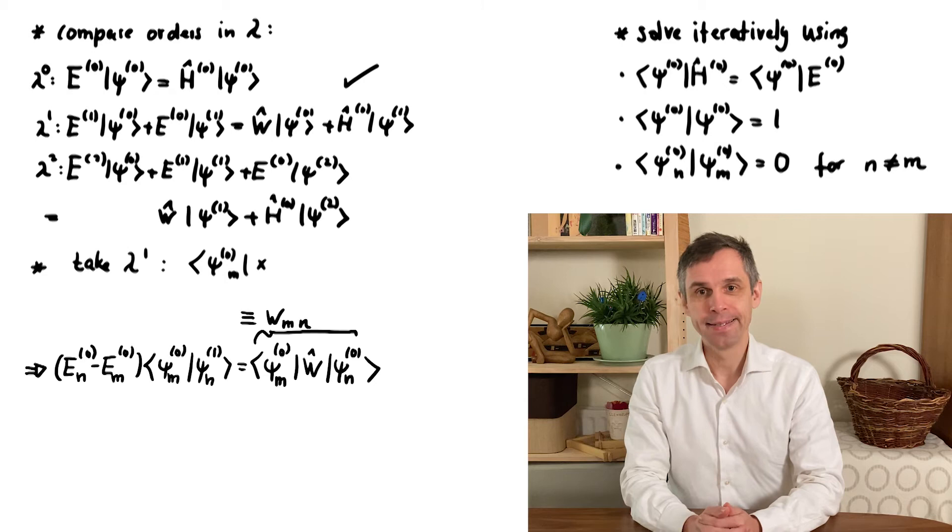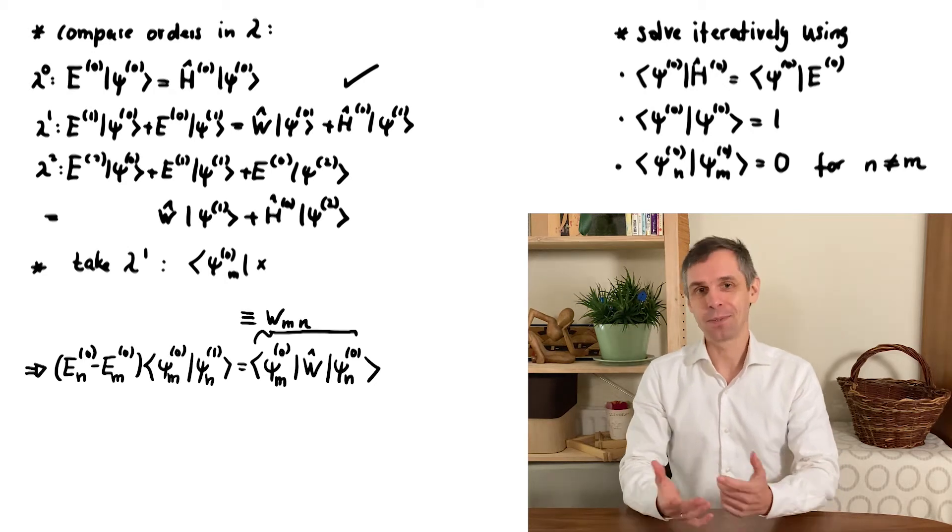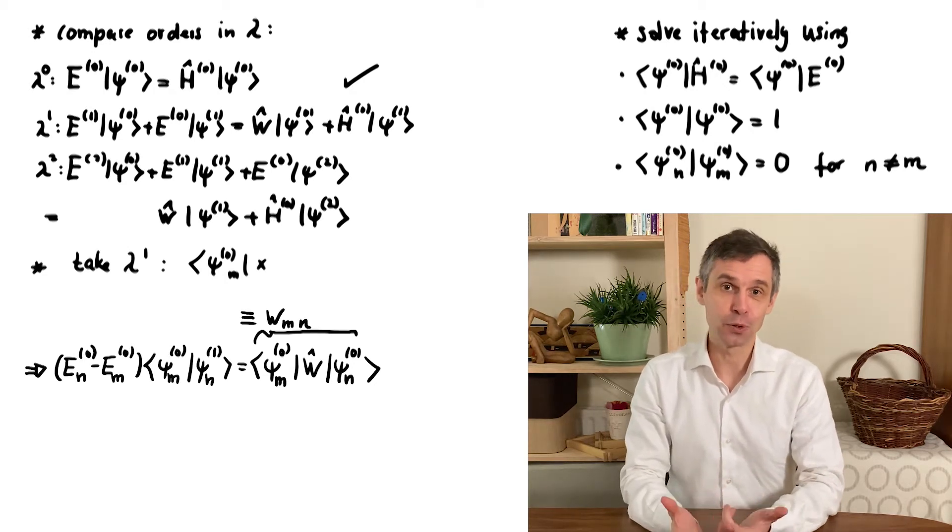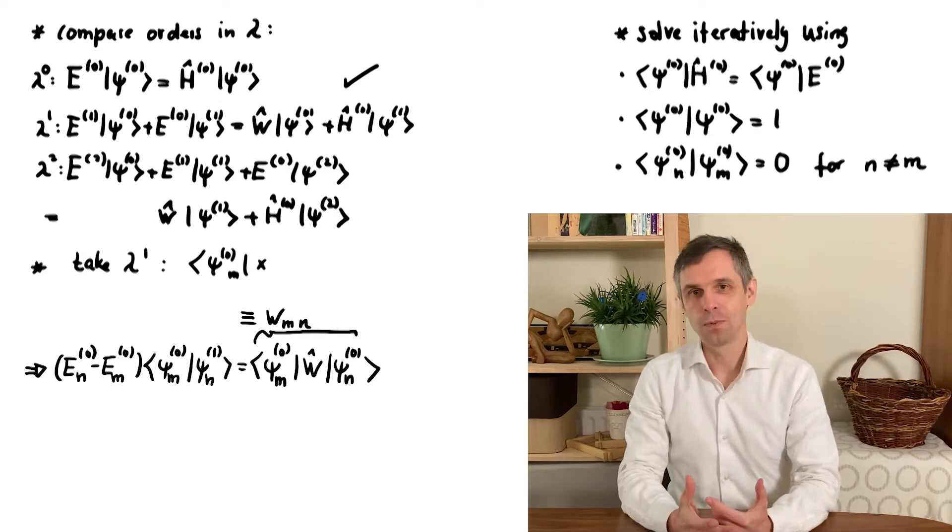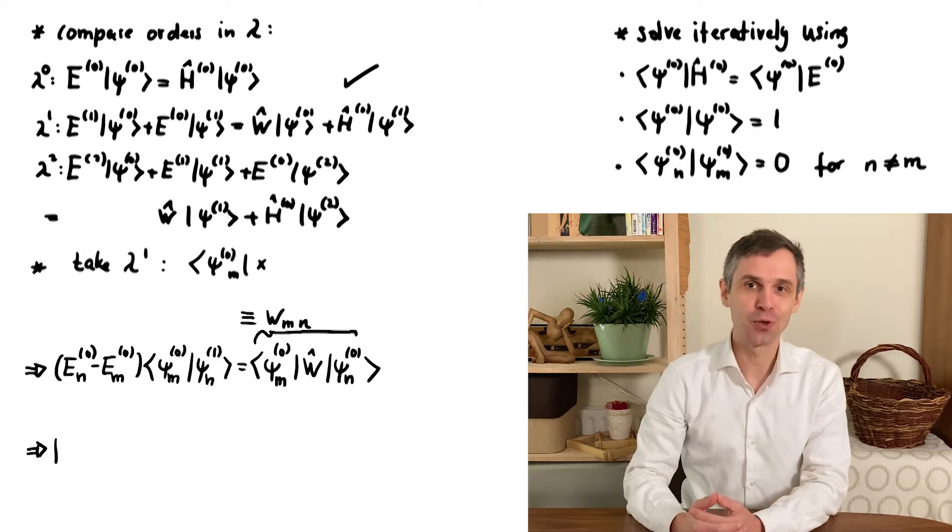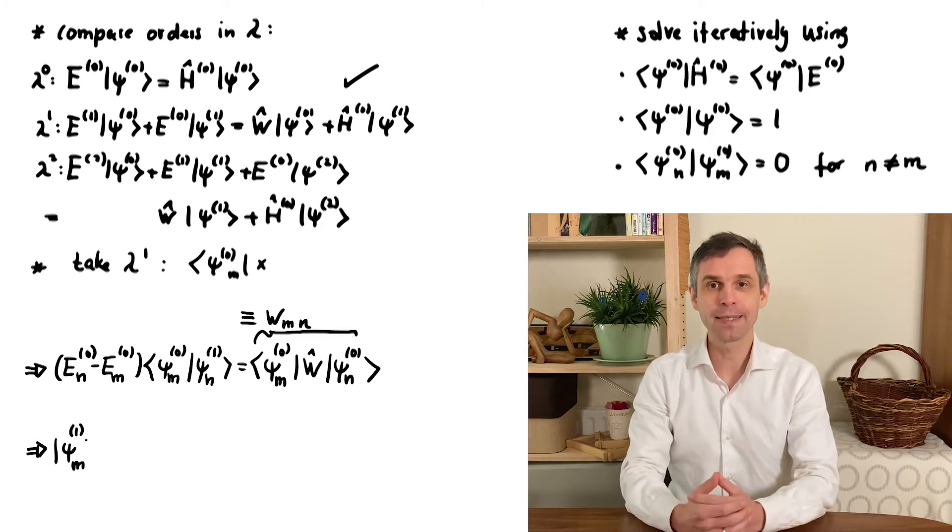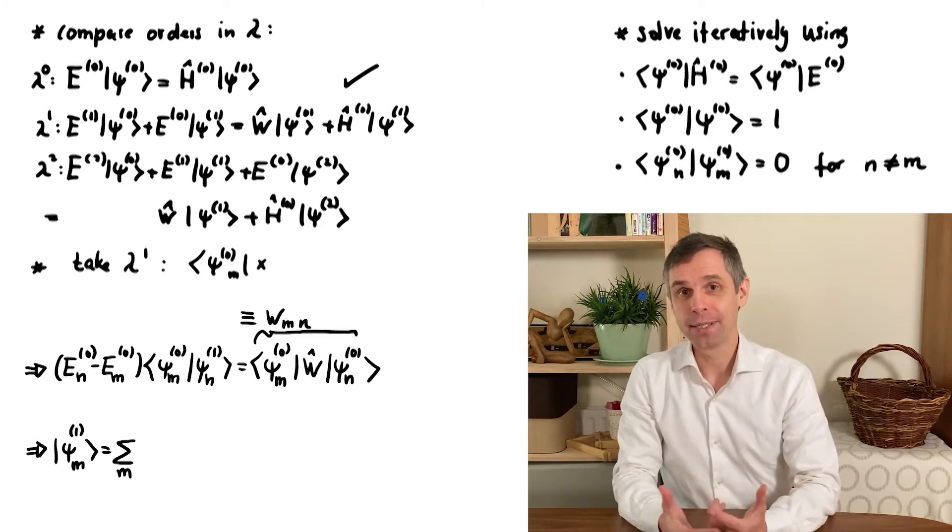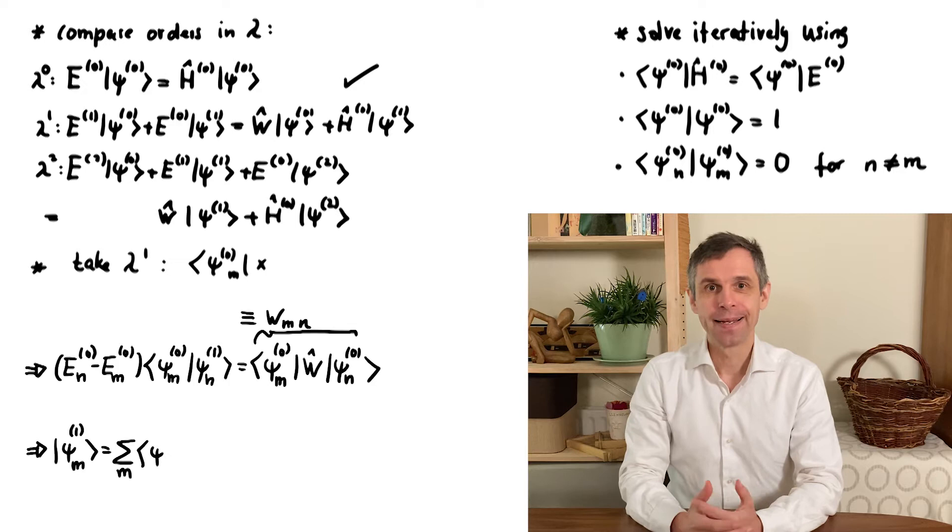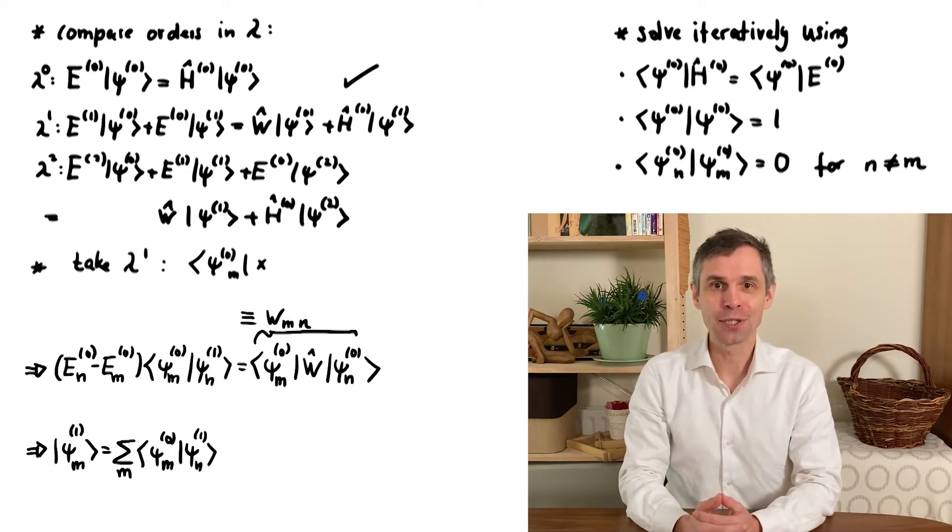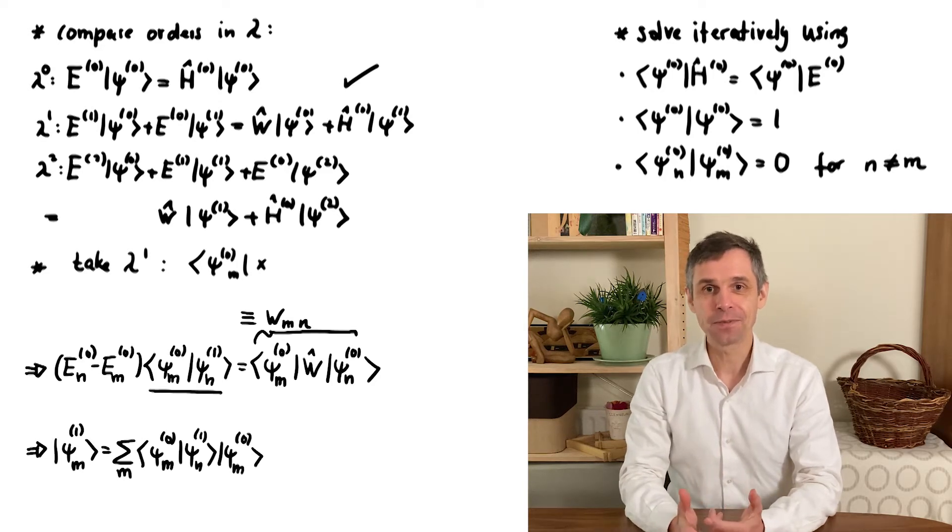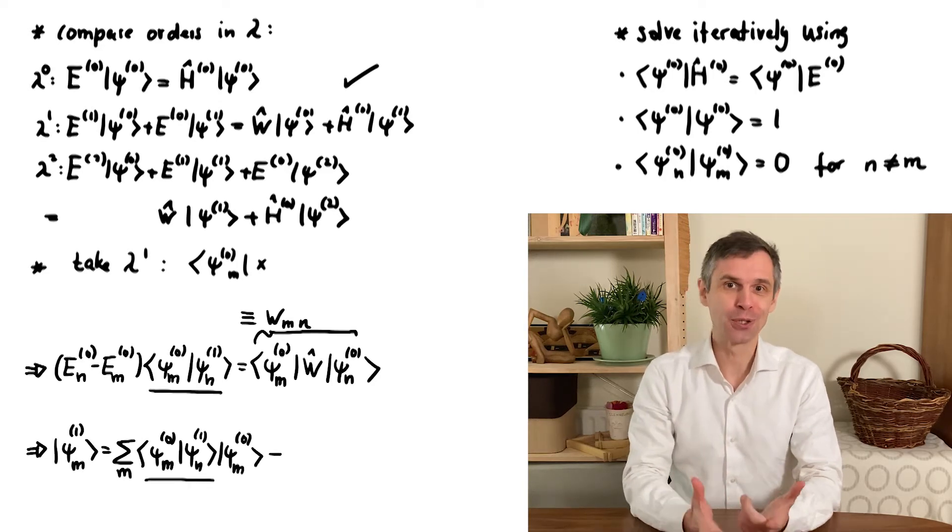Indeed, they are the matrix elements of this operator written in the basis of the original energy eigenstates. Now what we obtained in this way is a relation for the scalar product between the original state and the leading correction in the new state, and these terms are really just the expansion coefficients of this correction in the basis of the original eigenstates. We therefore find the following correction for the perturbed eigenstate.